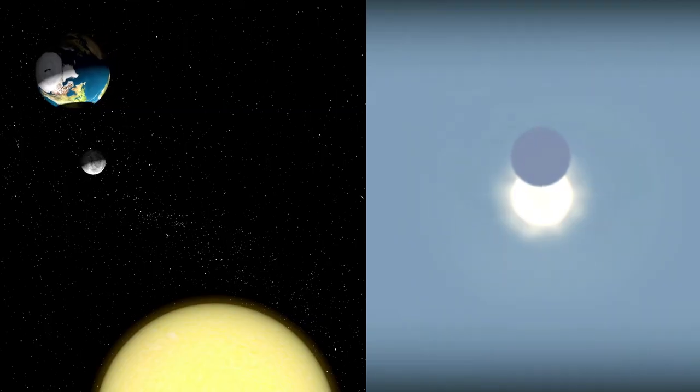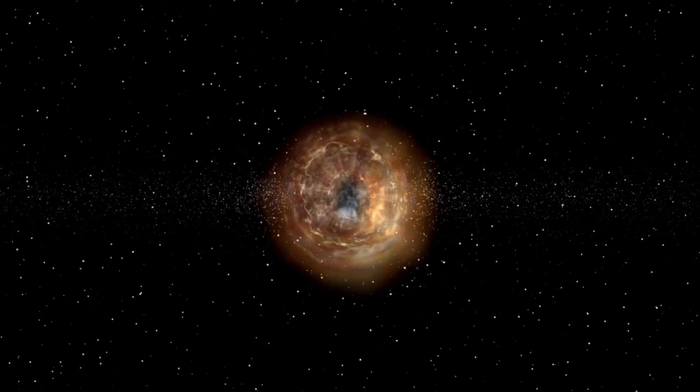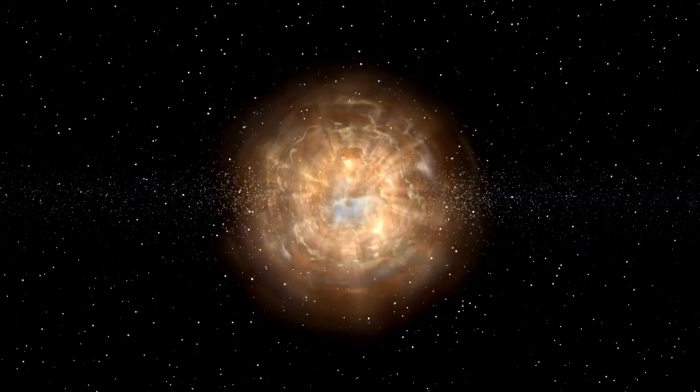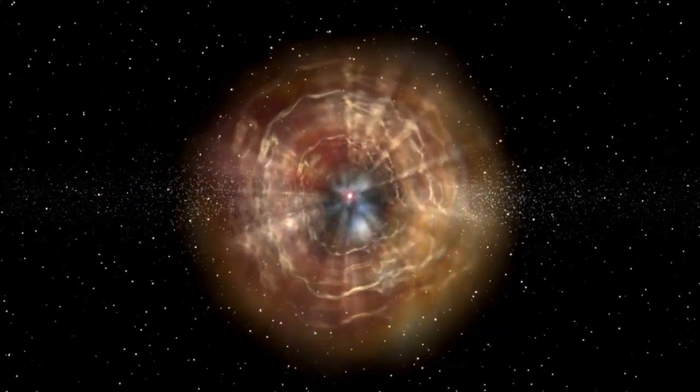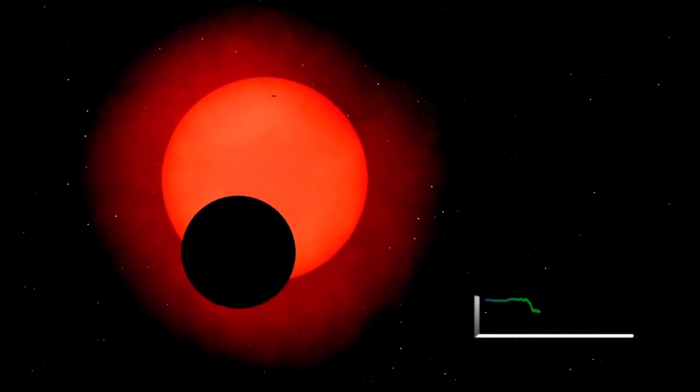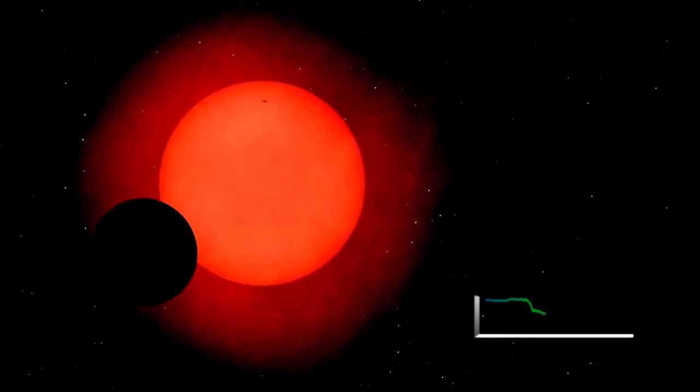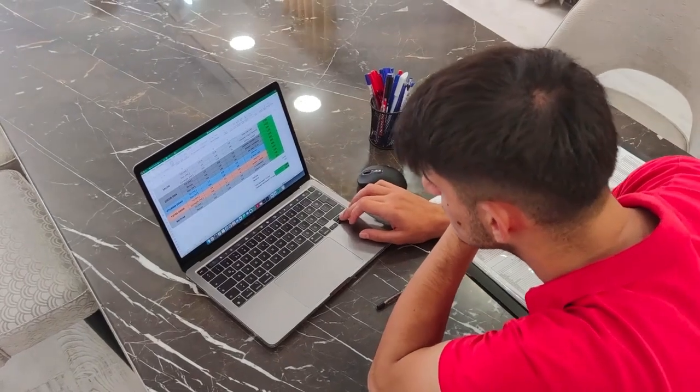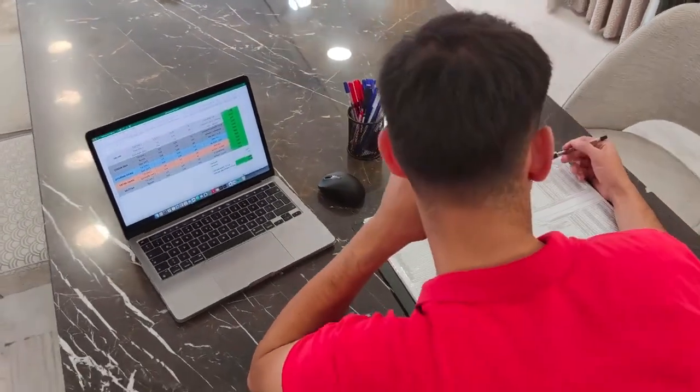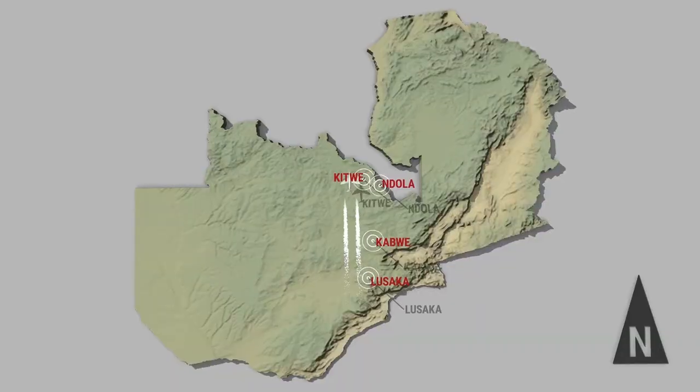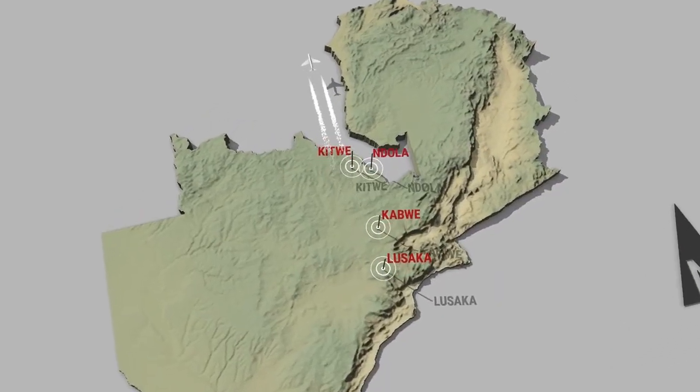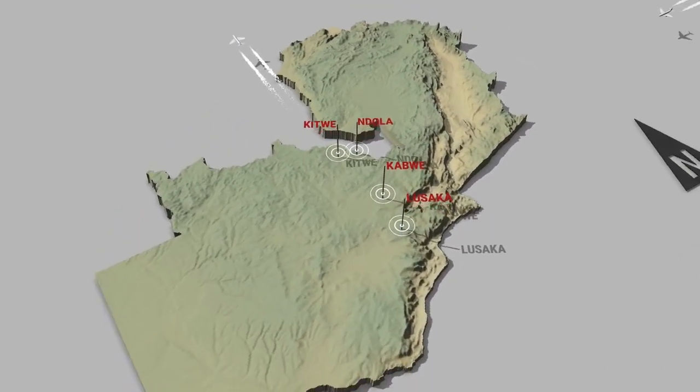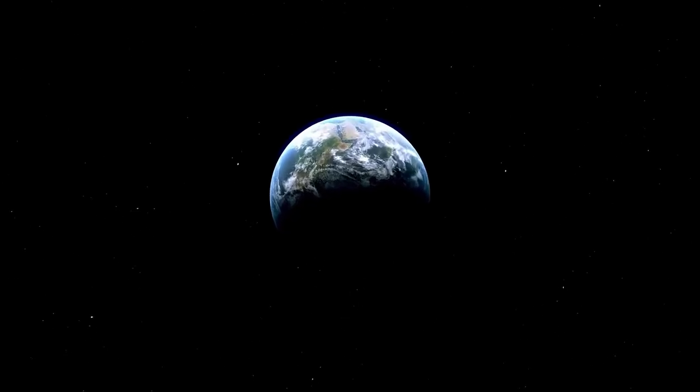Massive stars like Betelgeuse are complex laboratories of nuclear fusion, where the elements essential to life are created. The sudden brightening may indicate that fusion of heavier elements is intensifying, pushing the star toward its inevitable end. When fusion can no longer produce enough energy to counteract the force of gravity, the star collapses, leading to a dramatic explosion. If Betelgeuse is approaching this point, we may be witnessing some of the final warning signs.